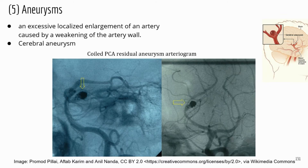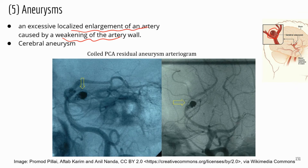An aneurysm is an abnormal enlargement of an artery caused by a weakening of the wall. It creates a balloon-like section of the artery because the wall is very thin. As blood flows through carrying pressure, it expands that weakened wall like a balloon. This makes it very susceptible to rupture, and if the blood vessel ruptures, that's going to lead to stroke.